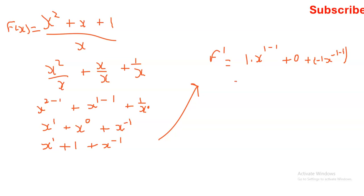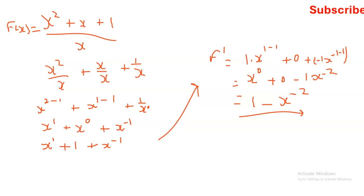So this simplifies: x to the power of zero equals one, the constant gives zero, and the last term gives negative 1 times x to the power of negative 2. So my final derivative answer is 1 minus x to the power of negative 2.